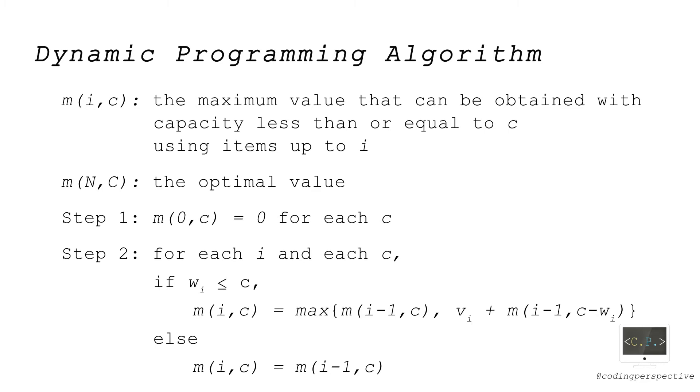If we don't include item i and leave it out, then the best we can do with items up to i-1 and capacity c is m(i-1,c).